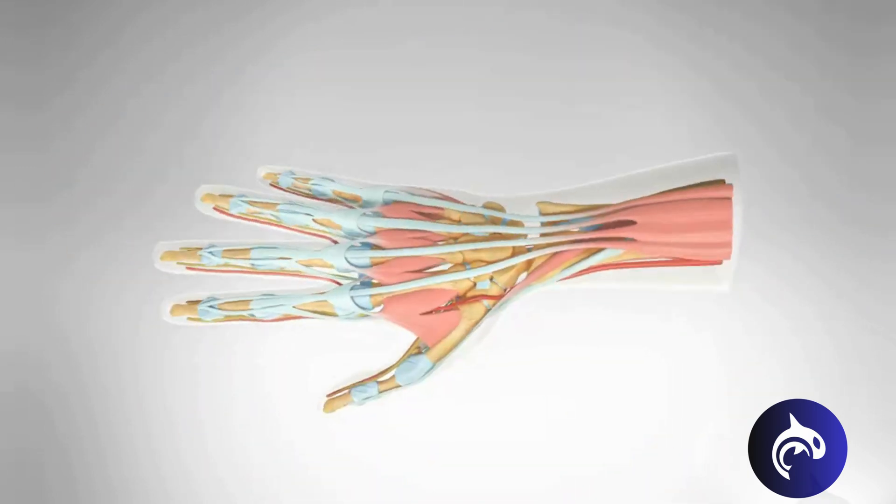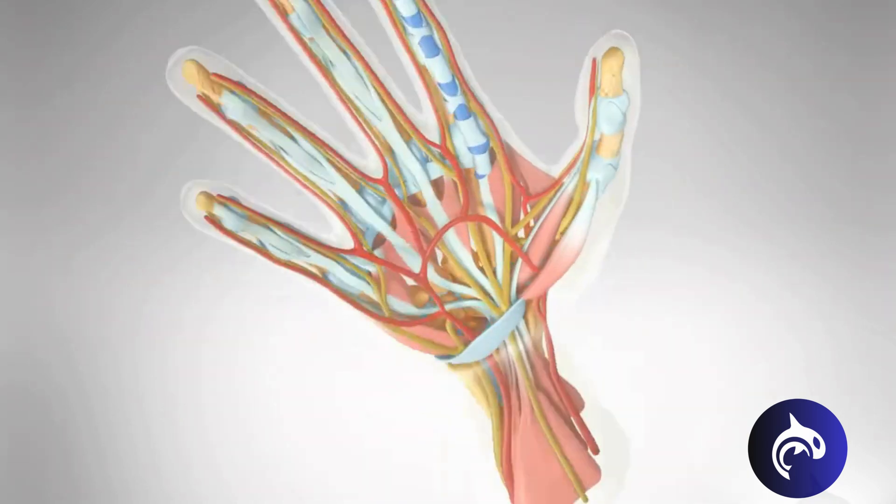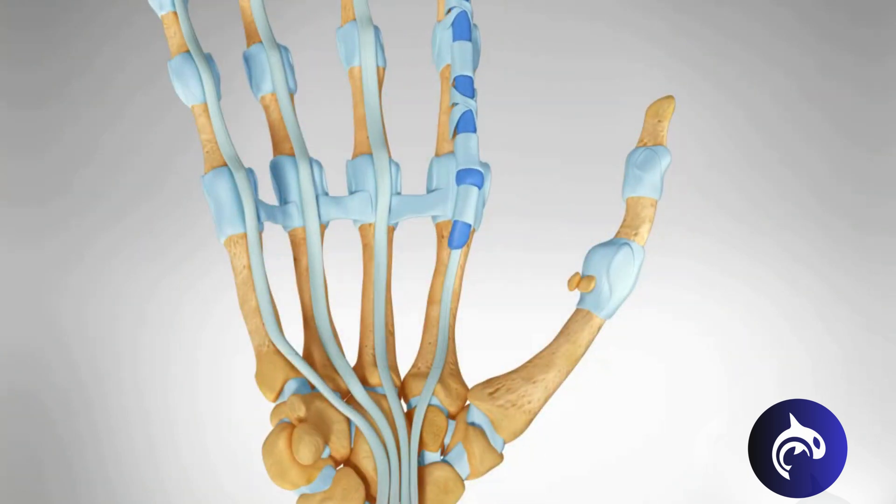But in trigger finger, the tendon develops a nodule or swelling, impeding its movement through the sheath.